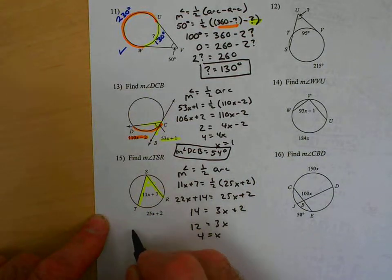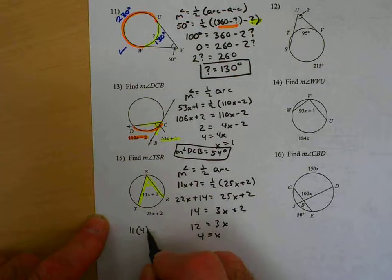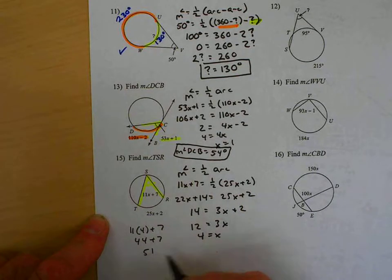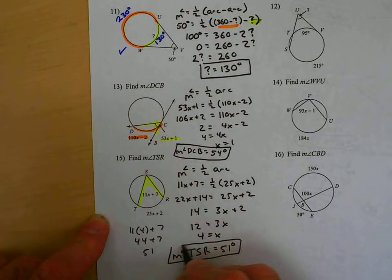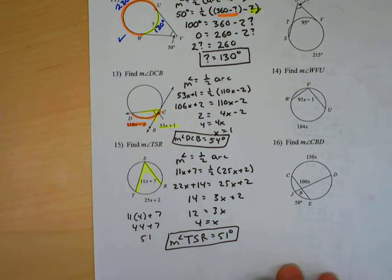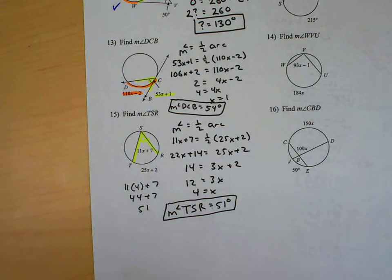If x equals four, the measure of this angle is 11 times four plus seven. That's 44 plus seven, which is 51. The measure of angle TSR is 51 degrees. And that's the odds on the extra practice. So, you can still cover this. Okay.